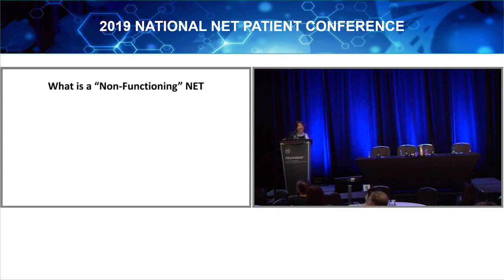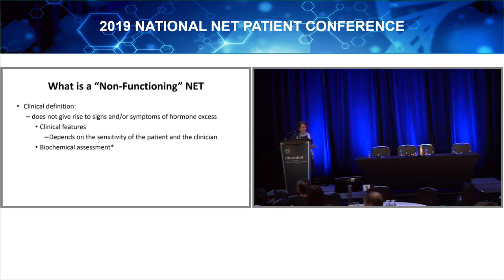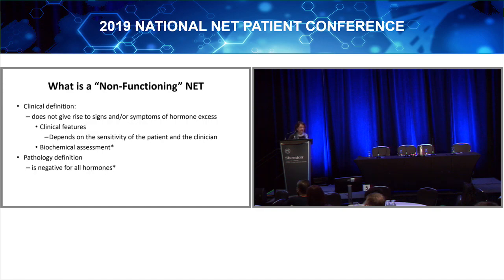The distinction between a functioning tumor — one associated with a hormone excess syndrome — versus a non-functioning tumor is important. A non-functioning tumor is supposedly one that doesn't give rise to signs or symptoms of hormone excess, but this depends on the sensitivity of the patient and the clinician. By biochemical assessment, we measure hormones in the blood, and some tumors actually make hormones that aren't secreted in sufficient quantities to be measured consistently.